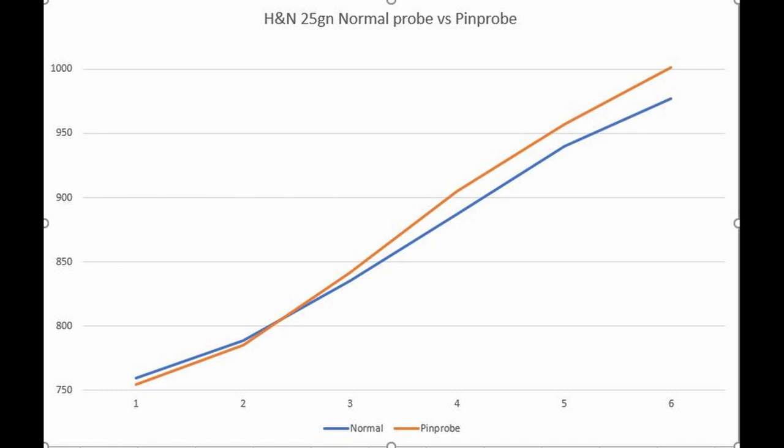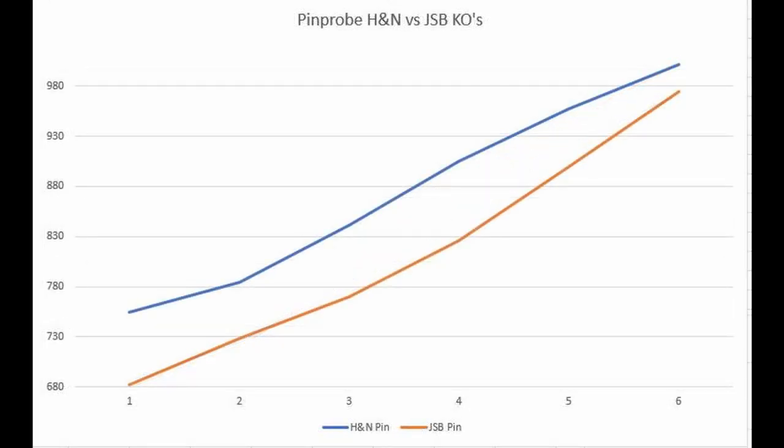The H&Ns enjoyed the pin probe a lot more than the JSB. I don't know if this huge spread is just because of 0.4 of a grain in the weight between the two. I don't think so. I think it's got more to do with the design where the H&N is more of a cone base in the back and they retain air a lot better, as well as the fact that the H&Ns are 217s versus the knockouts only 216s.